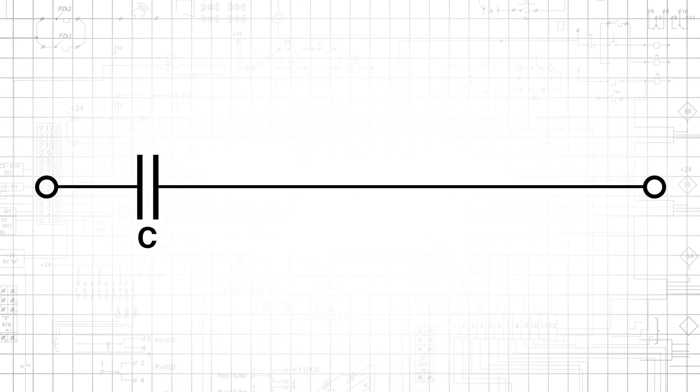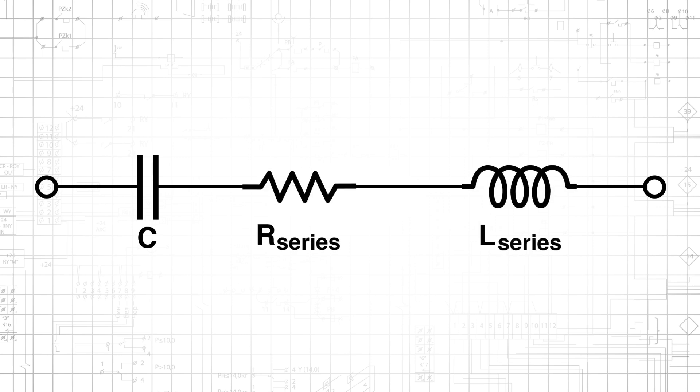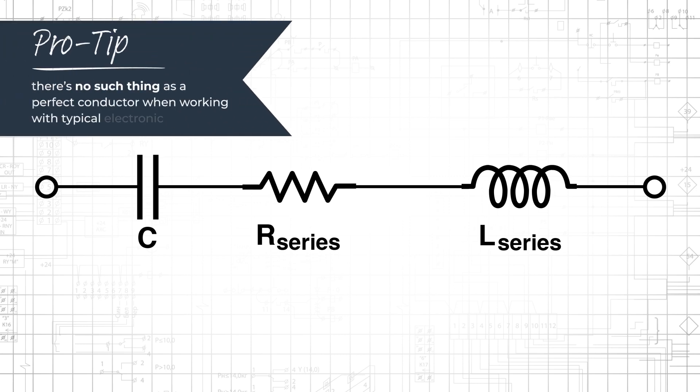Electrical circuits are filled with resistance that does not originate from resistors. Wires, printed circuit board traces, pins on integrated circuits, leads on capacitors and inductors. When we're working with typical electronic systems, there is no such thing as a perfect conductor.